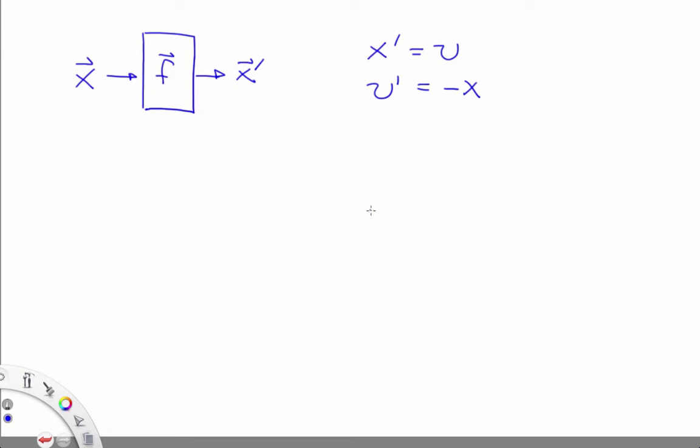The state space of this system looks like this, and as I mentioned, that pair of first-order ODEs tells you, for every point in the state space, which direction is downhill.